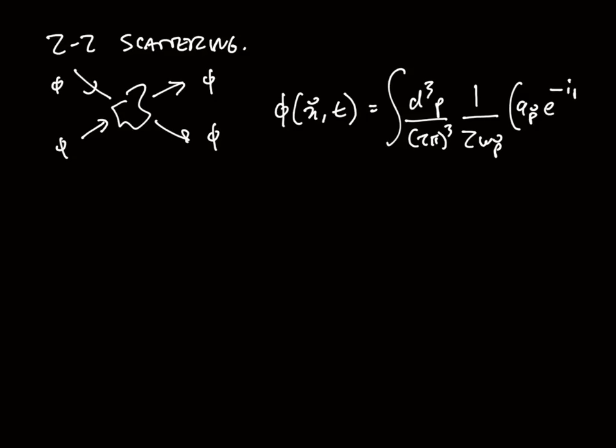We have the following formula from IFT: e to the minus i p dot x - I'm running out of space - dagger e to the plus i p dot x. That's a p dot x running off the edge of the screen here. In particular, this is a four momentum, it's a four product, and the components of that four momentum are ω_p and p vector. ω_p is root p squared plus m squared.